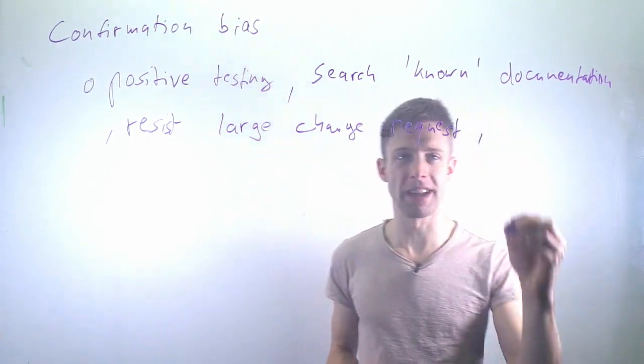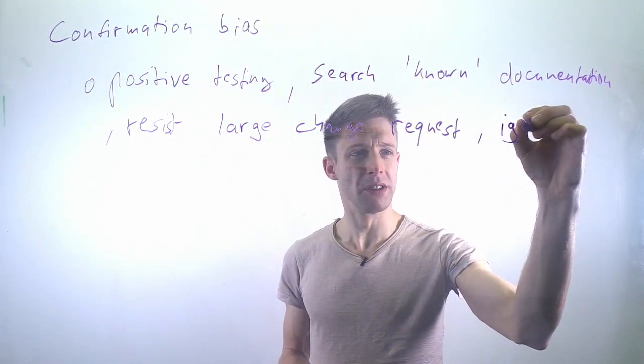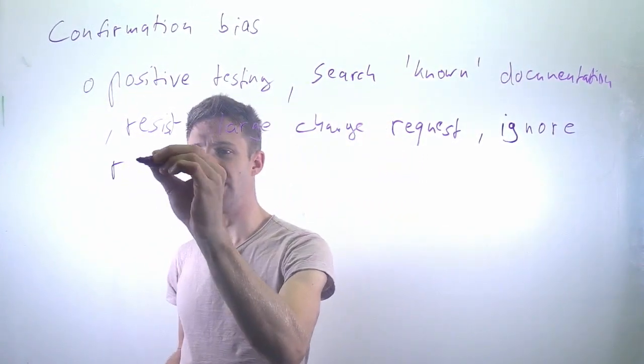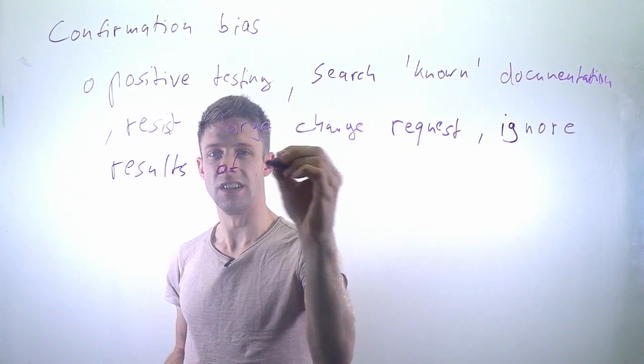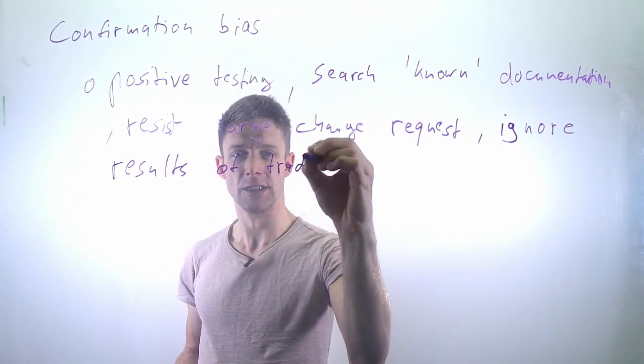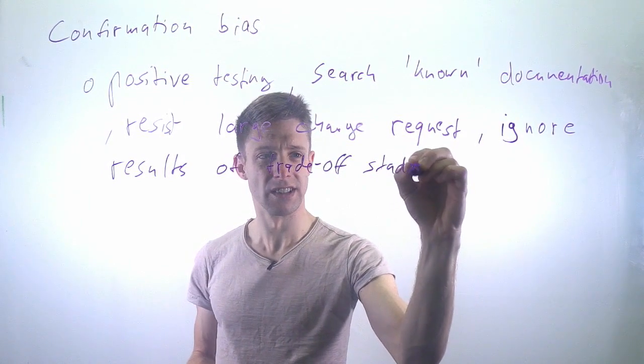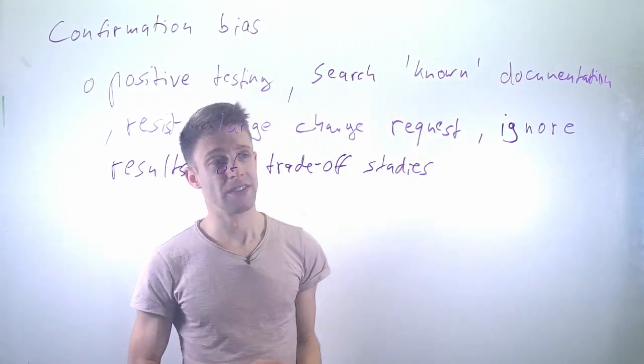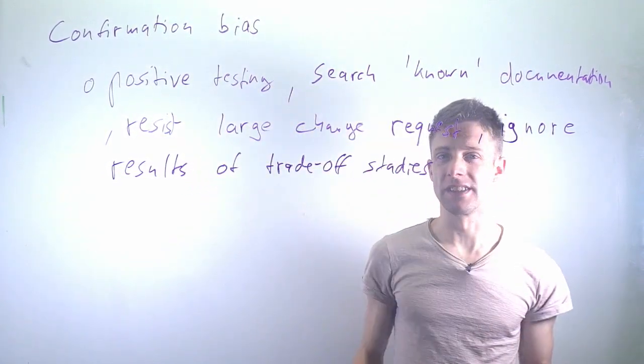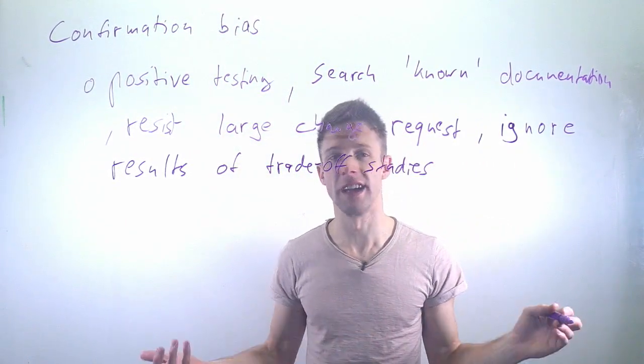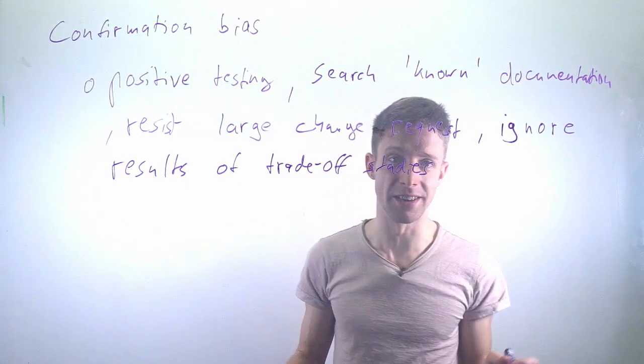Finally, when doing trade-off studies—for example, trying out two architectures to see which one is better—we usually have an opinion. We tend to ignore results of trade-off studies if they go against our opinion, trying to find arguments for why the architecture we favored in the beginning was better to start with.